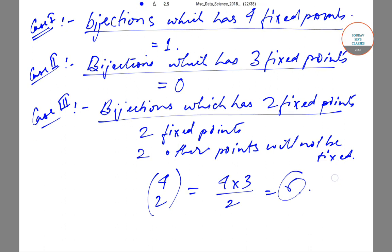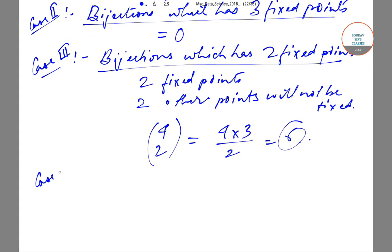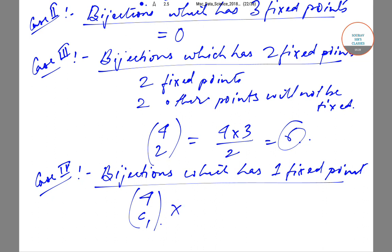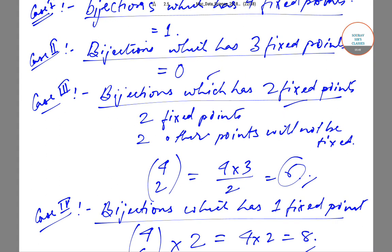Case four will be bijections which have one fixed point. Since we have to select one point from the four points, that can be done in 4C1 ways. The remaining three points can permute among themselves in 2 ways without introducing any new fixed points. So that will be 4C1 × 2 = 4 × 2 = 8. So bijections with one fixed point: 8; two fixed points: 6; three fixed points: 0; four fixed points: 1.